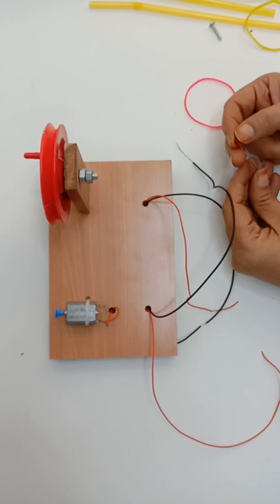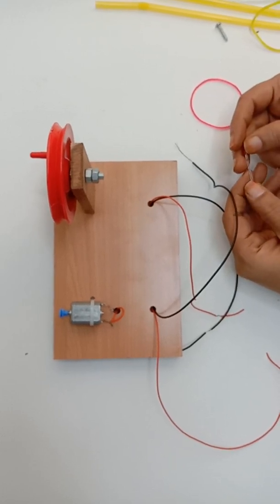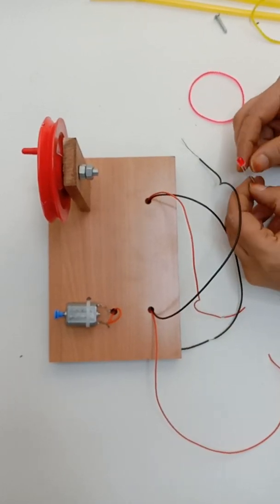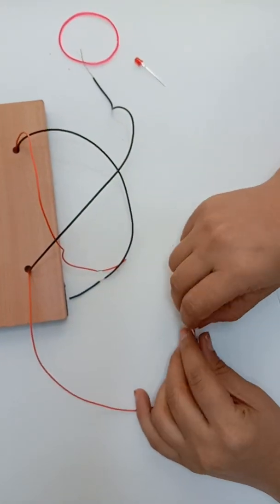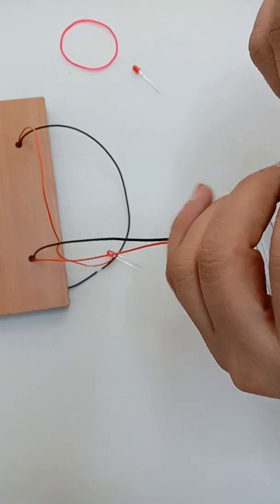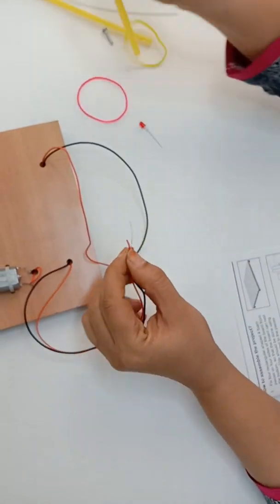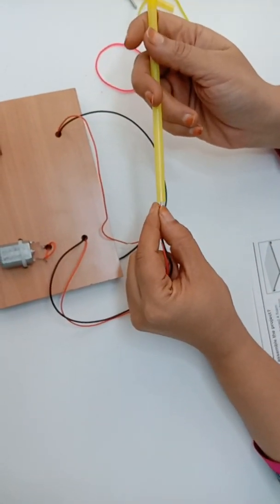Now as you know, long terminal of LED is positive, short is negative. Before doing that, one more thing we are supposed to do: we will insert this wire through this straw.